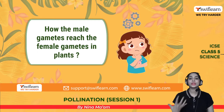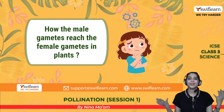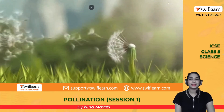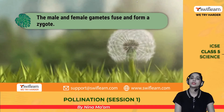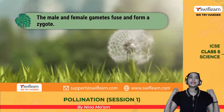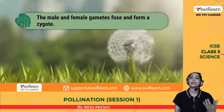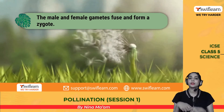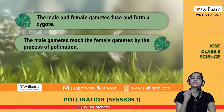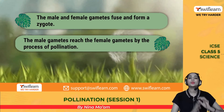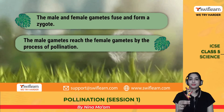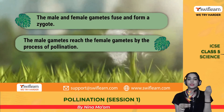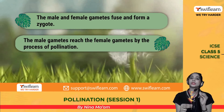How do male gametes reach the female gametes in plants? Pollen grains are very light and fly in the air. The male and female gametes fuse and form a zygote. Just like humans have both female and male genders, flowers also need a female gamete and a male gamete — they fuse together and form a zygote. The male gametes reach the female gametes by the process of pollination. These are the anther and the stigma — pollen grains transfer from the anther and attach to the stigma.